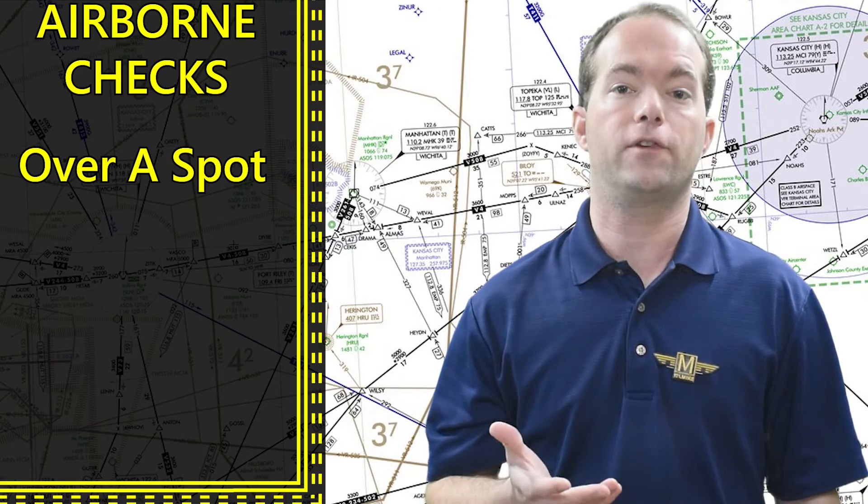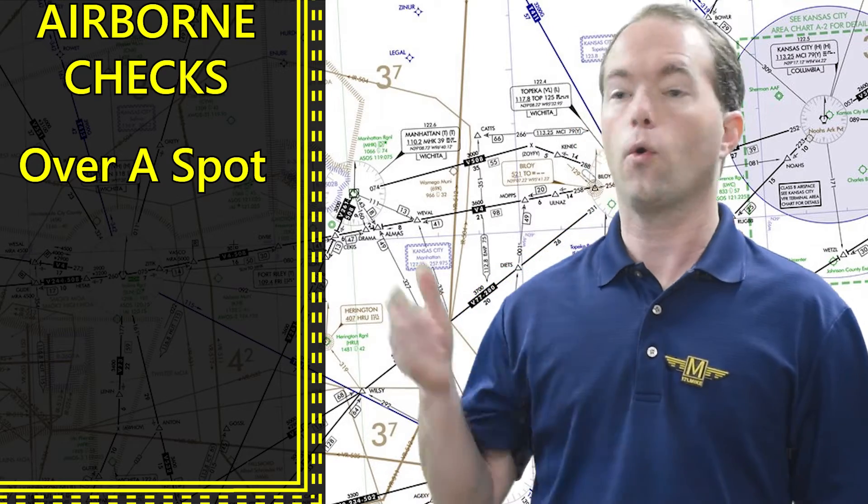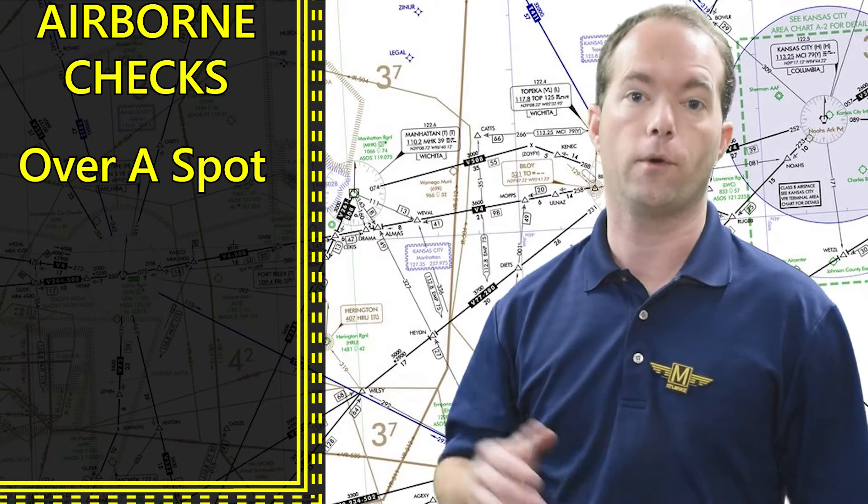An airborne check is done over a specific spot on the ground, or in the air near an airport you can do it on a certified radial from a VOR.